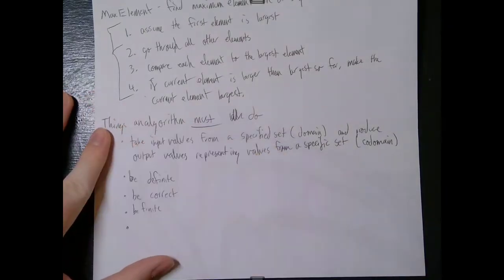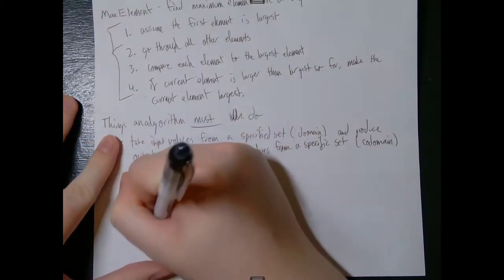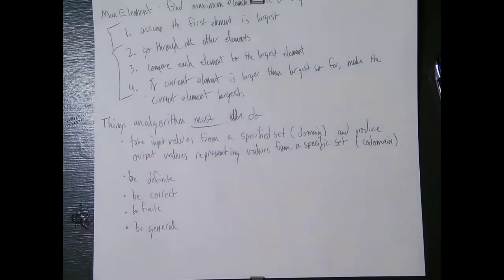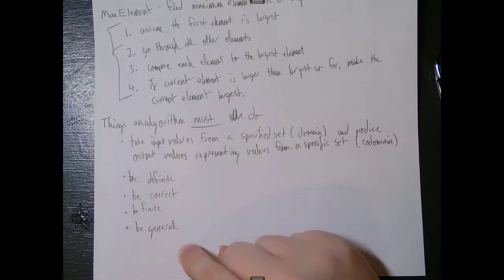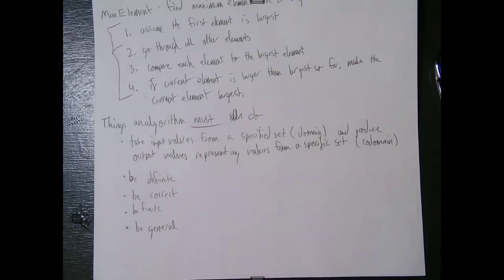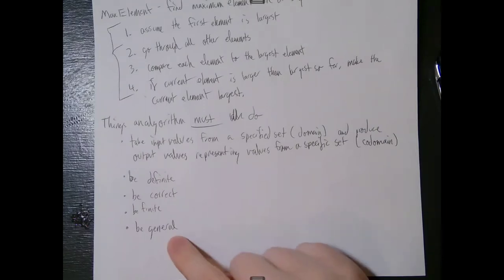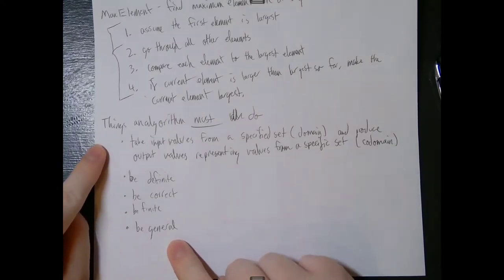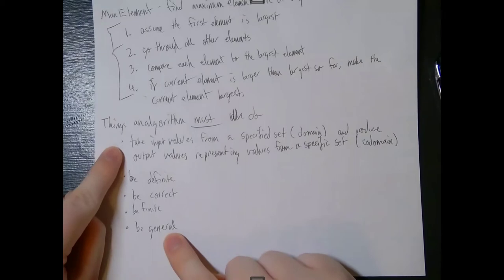The last thing an algorithm must do is be general. We've talked a lot about arbitrary values in this class, and the same applies to algorithms. What it means to be general is that it must apply to all elements from the domain. This comes from the fact that a function has a definition for every input value in the domain, so for an algorithm to correctly define a function, it must work for every input value.